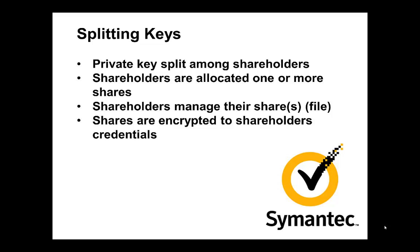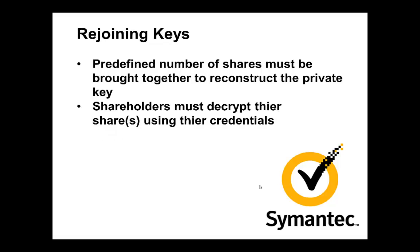What is splitting? Splitting is the process of breaking the private key into multiple files and distributing them to shareholders. The shareholders are allocated one or more shares for their file. They must manage their files. The shares, the files, are encrypted to the shareholders' credentials, be it their public key or a passphrase. Rejoining is the process of bringing back together a predefined number of shares to reconstruct the private key. The shareholders must decrypt their shares before they can be used.